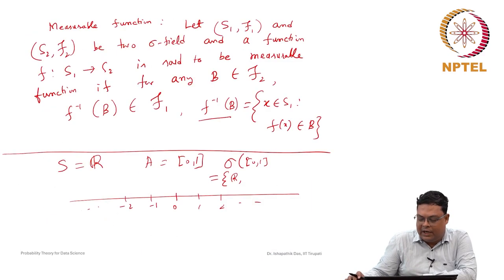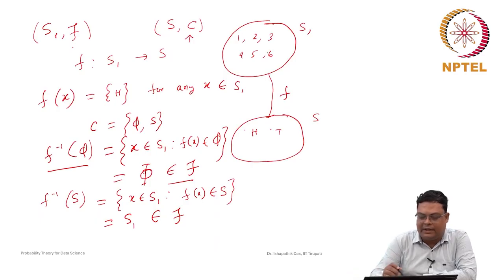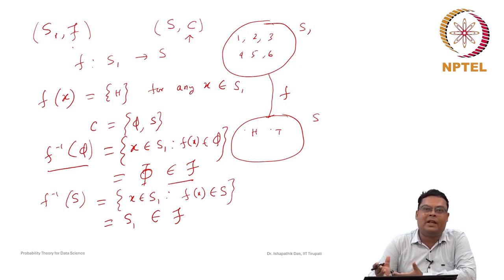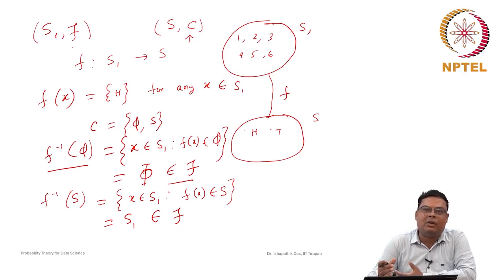If you consider S equal to R, it is infinite. In the finite examples we discussed, you can say the power set contains 2 to the power n elements. But if the set is infinite — like the real numbers or even the interval [0,1] — then it is uncountably infinite. The power set is huge; we cannot just count it as 2 to the power n. We represent it by some cardinality — a cardinal number — which is a different concept.